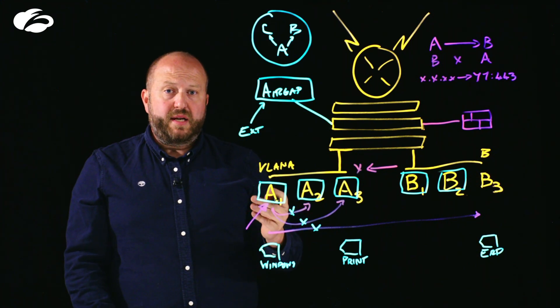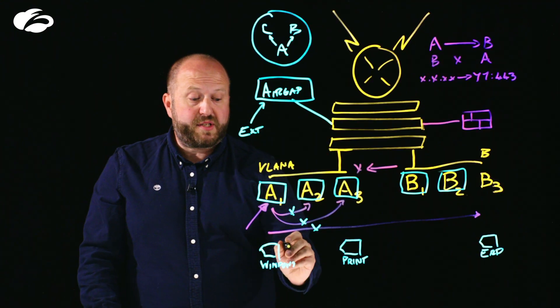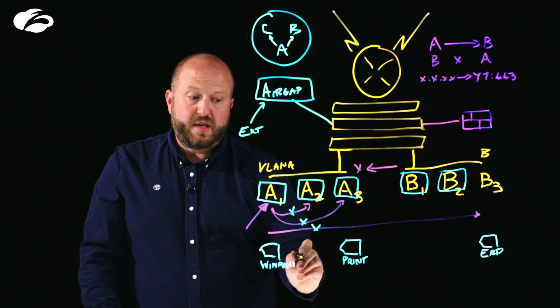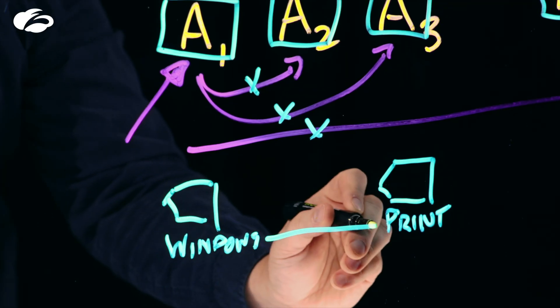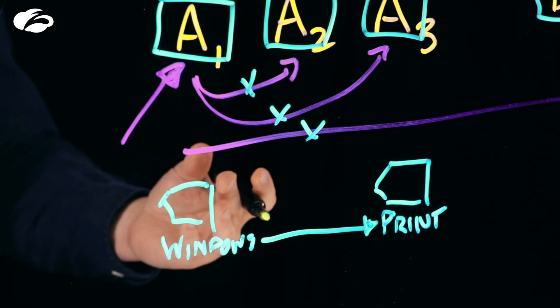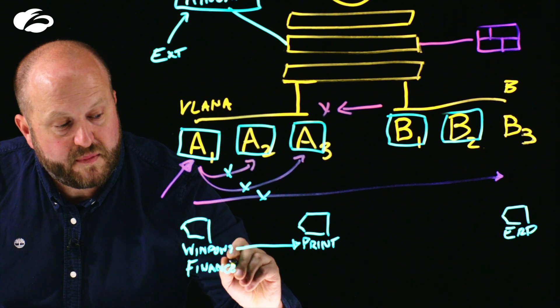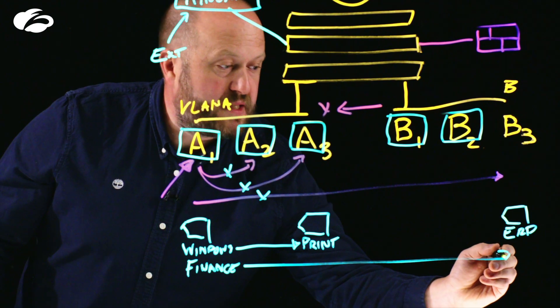What this means is that we can use these tags to build up really simple to understand policy that matches the use cases. For example, a Windows PC with a high posture. So a corporate Windows PC can talk to the printers or a finance user can talk to the ERP system.